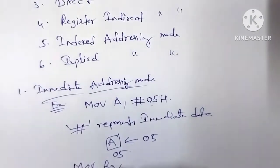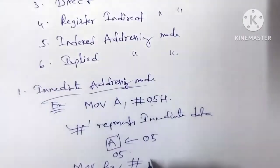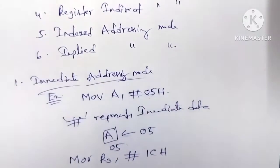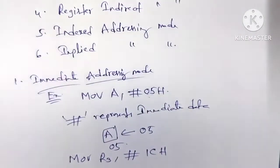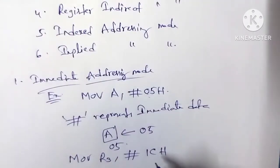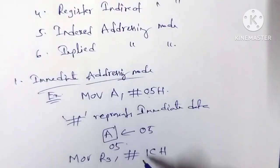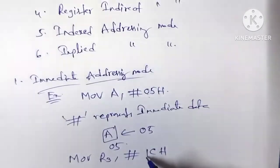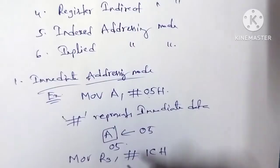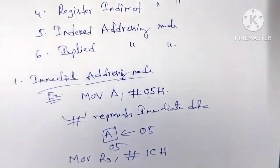Another example: 'MOV R3, #1CH'. Here 1CH is the constant data. The hash symbol represents immediate data, and the constant value 1CH is moved to register R3. That is the immediate addressing mode.